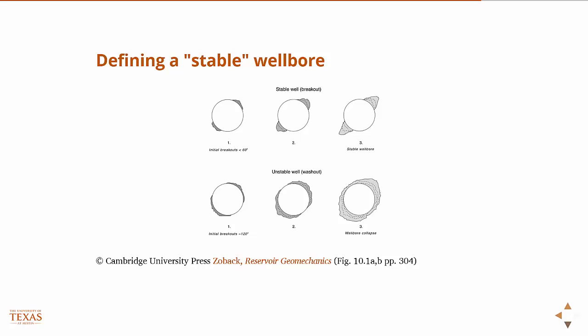Typically, if breakouts occur in a region of 90 degrees or less — about one-fourth of the wellbore — and you only observe breakouts in that region, then as an empirical rule of thumb, the wellbore will remain stable. The breakouts don't typically widen in these scenarios; they just get deeper, and while you have breakouts, they will be stable.